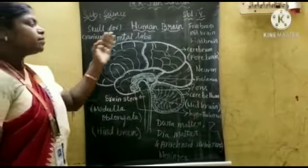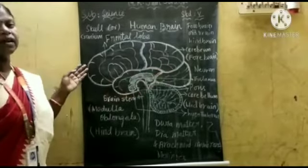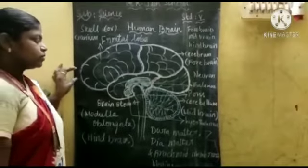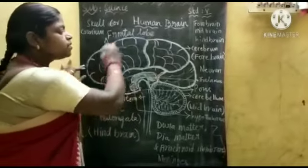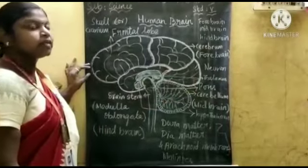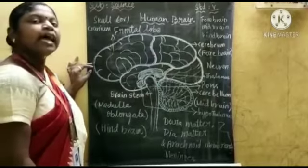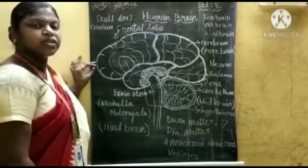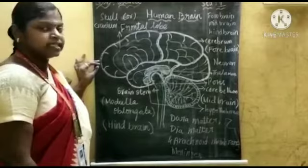The cerebrum is the largest part of the brain. Cerebrum is the centre of the human nervous system. It is responsible for intelligence, imagination, and reasoning.